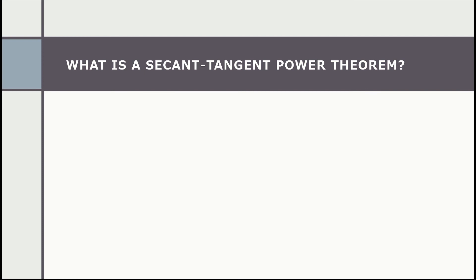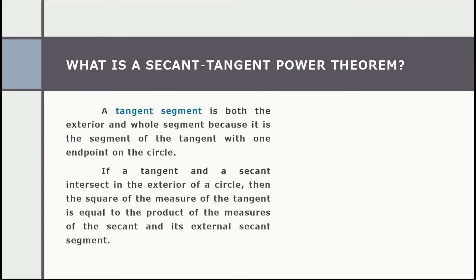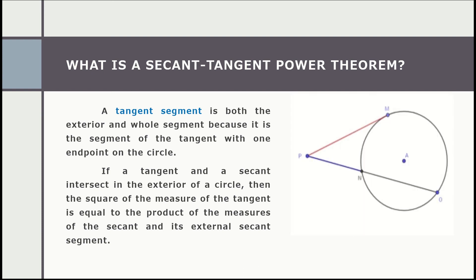We are now on the last power theorem: the secant-tangent power theorem. A tangent segment is both the exterior and whole segment because it is the segment of the tangent with one endpoint on the circle. If a tangent and a secant intersect in the exterior of a circle, then the square of the measure of the tangent equals the product of the measures of the secant and its external secant segment. In the given figure, MP is the tangent and OP is the secant, with NP as the external secant segment. The formula is: MP² = OP · NP.